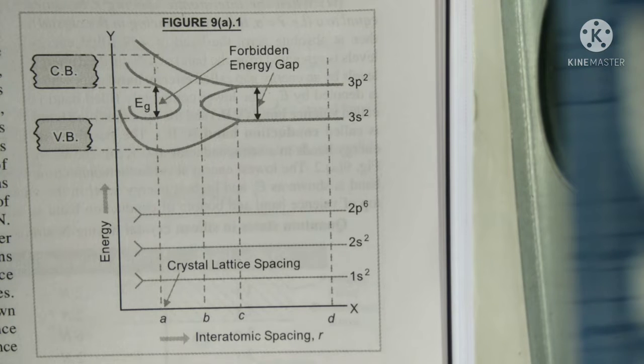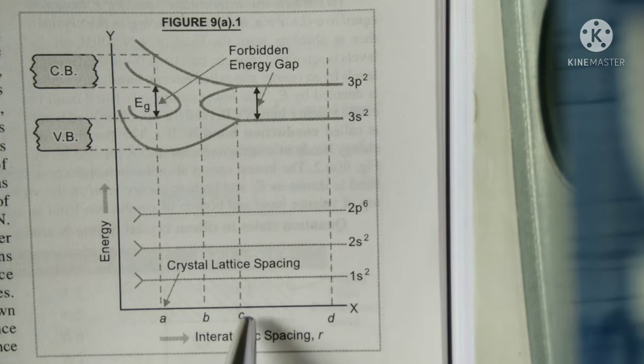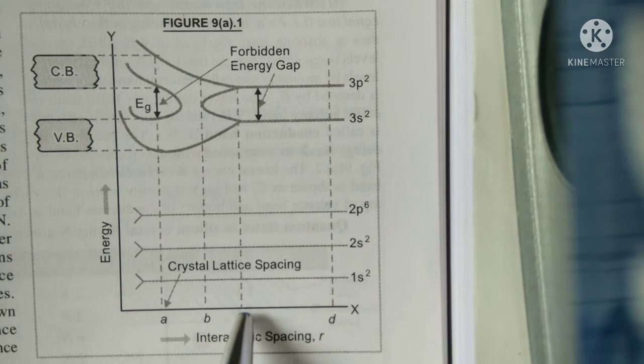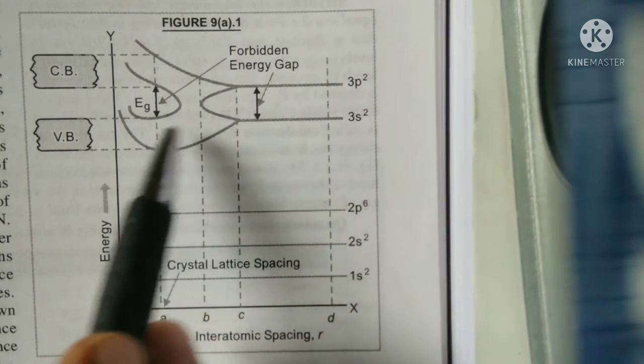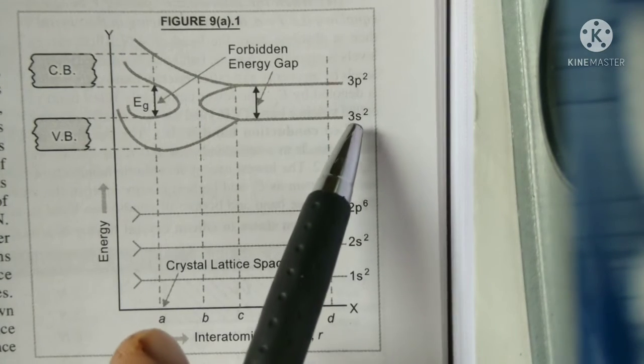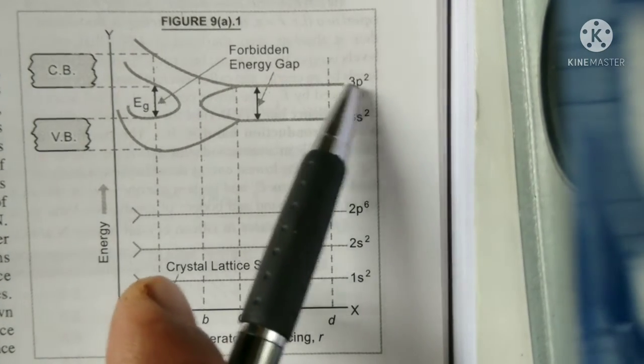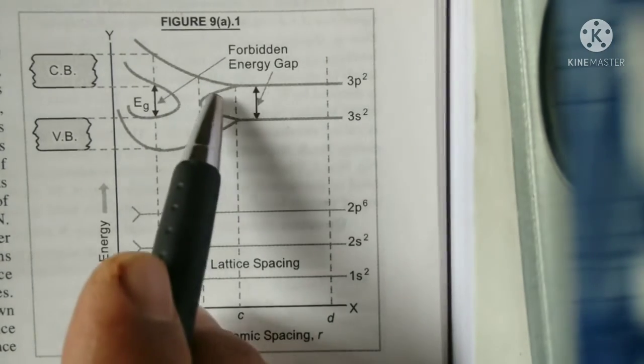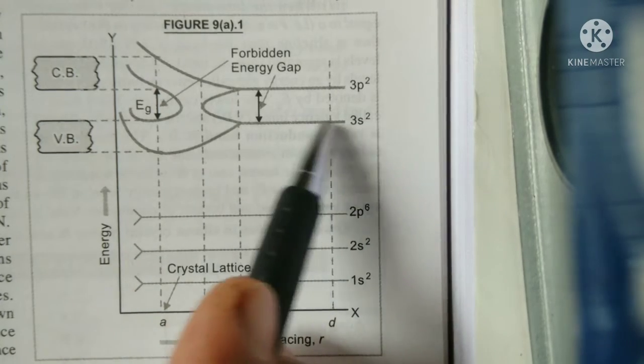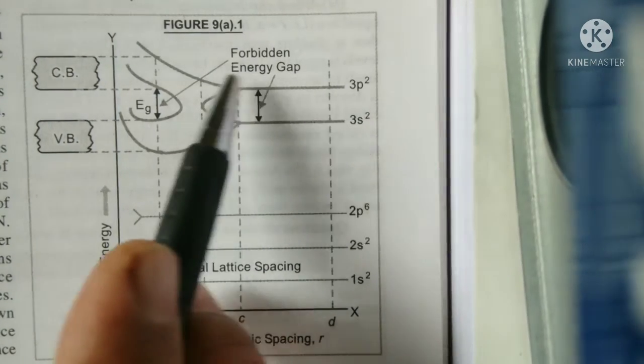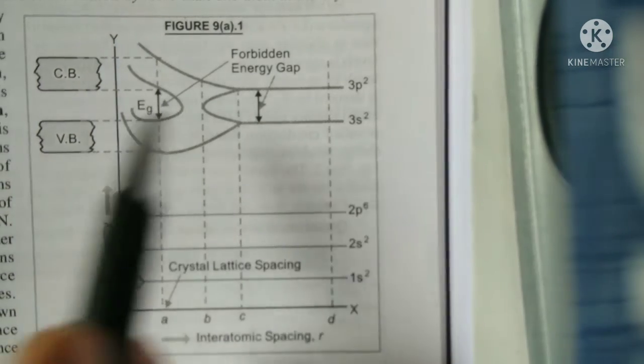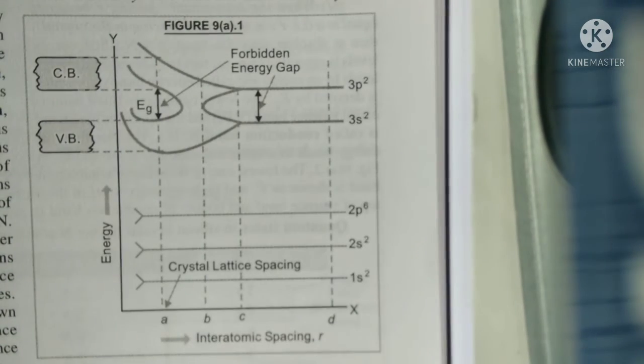When the interatomic spacing R is less than C but greater than B, between B and C, then what happens? The difference between 3s energy levels as well as 3p energy levels, the gap will reduce. The gap between 3s level and 3p energy levels, that gap will slightly start to reduce.